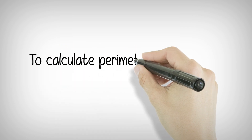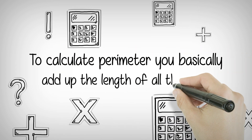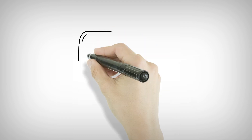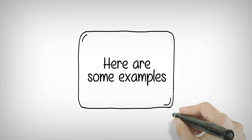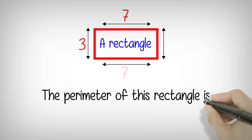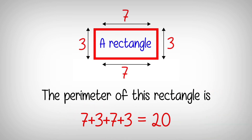To calculate perimeter, you basically add up the length of all the sides. Here are some examples. A rectangle: the perimeter of this rectangle is 7 plus 3 plus 7 plus 3, which equals 20.